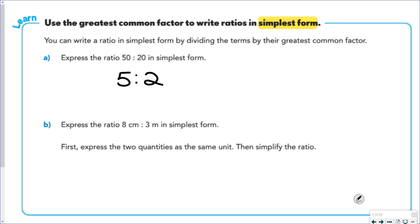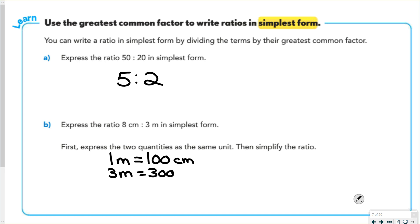For part B, when we have 8 centimeters to 3 meters, we first have to put them in the same unit. We know that 1 meter is equal to 100 centimeters, and so 3 meters would equal 300 centimeters. So we would have the ratio of 8 to 300, and we can divide those both by 4 to get the ratio of 2 to 75.